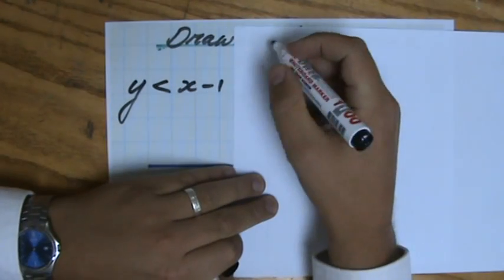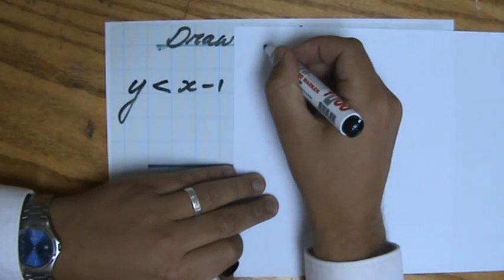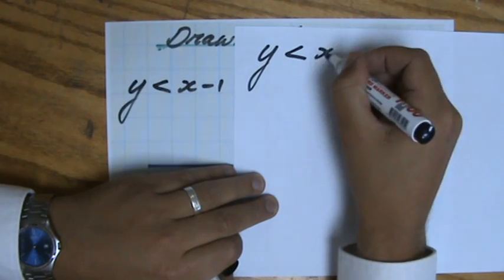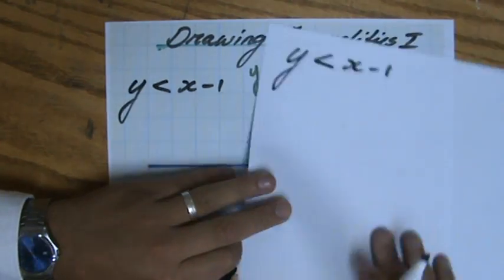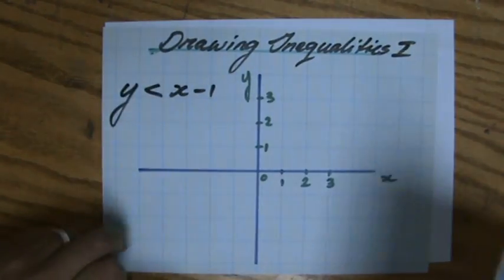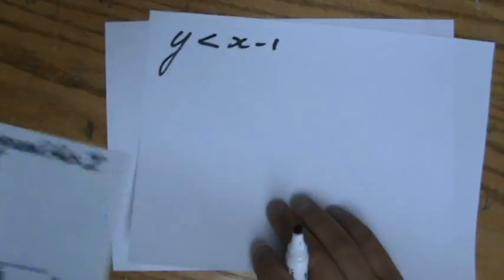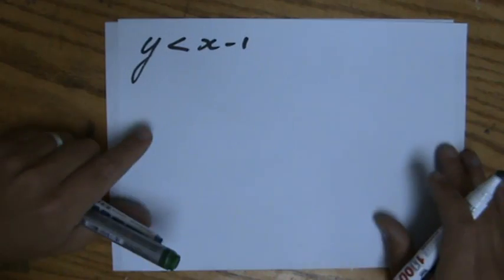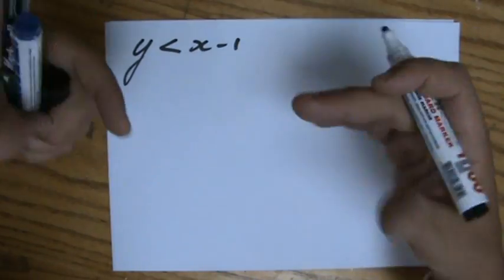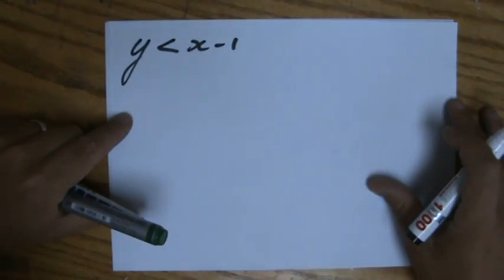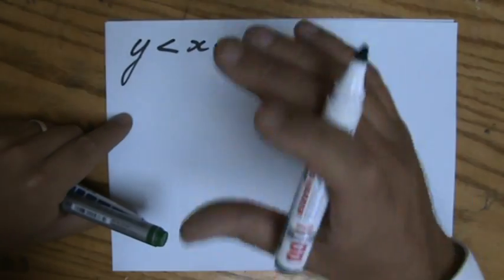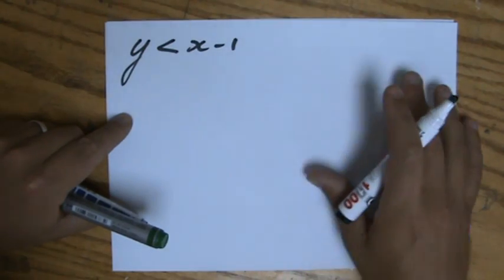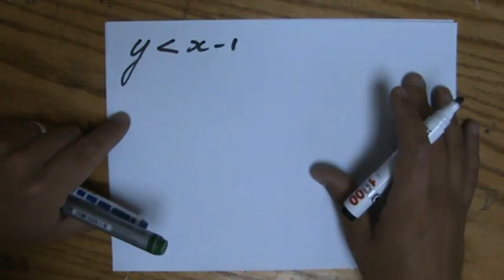I'm just going to copy the inequality here: y is smaller than x minus 1, and then I will return to this sheet in a minute. You need your understanding of drawing inequalities especially for linear programming, so check those videos as well that I've made about it.